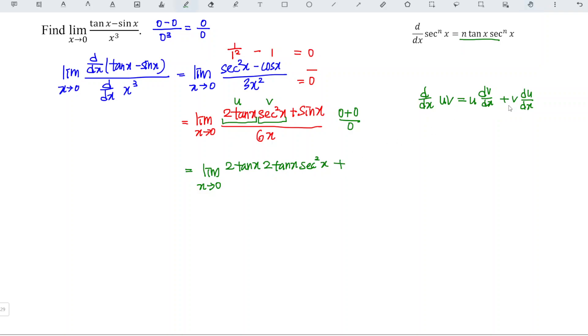Plus v, which is sec²(x), times du/dx. Differentiate 2tan(x) is 2sec²(x). And we have to differentiate sin(x), which is cos(x). We have 6x in the denominator. When we differentiate 6x we get 6.